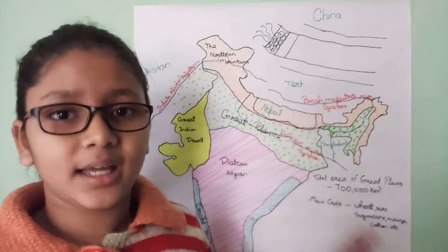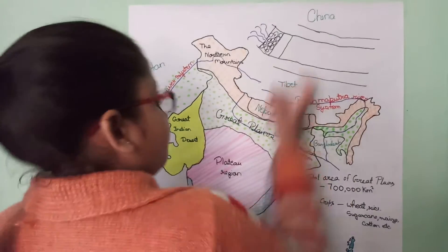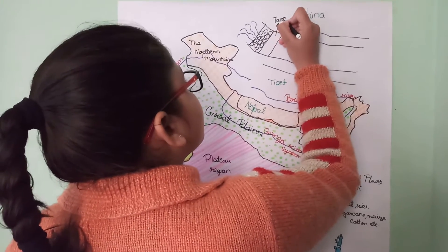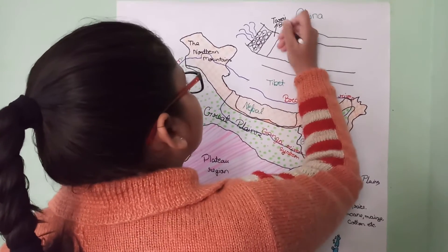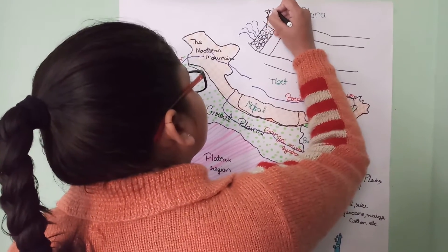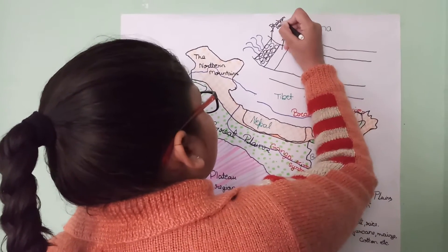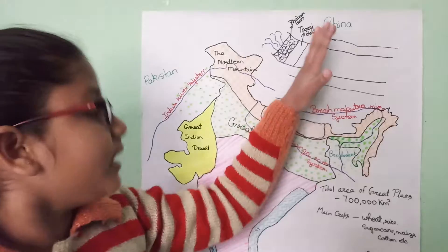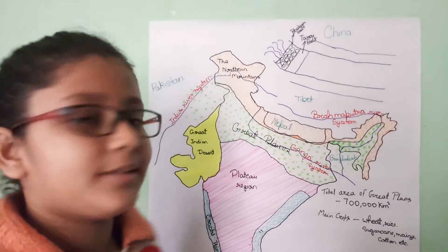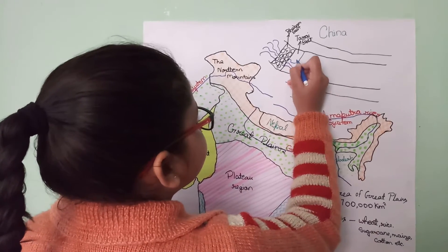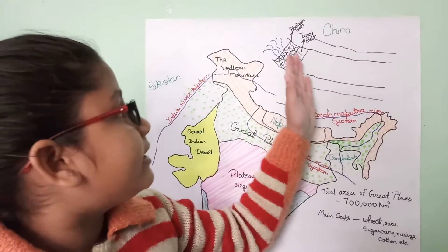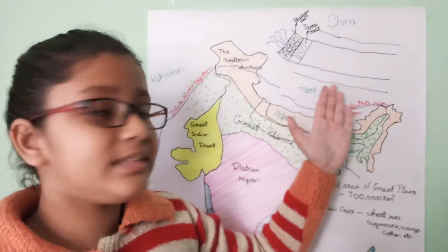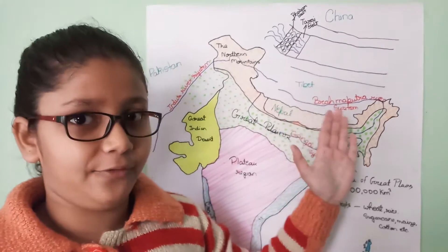Then, this belt is the Terai belt. It is in the south of the Bhabar belt, and in this region the streams of the rivers reappear. This region has newer alluvial soil. This region is very moist and thickly forested due to heavy rainfall.